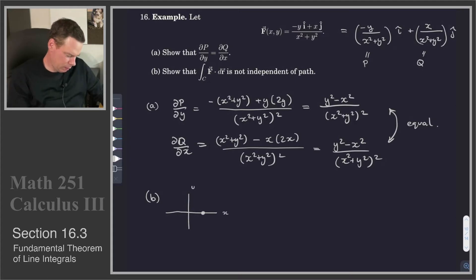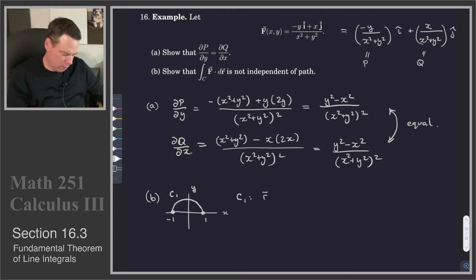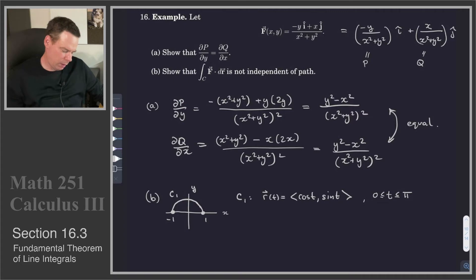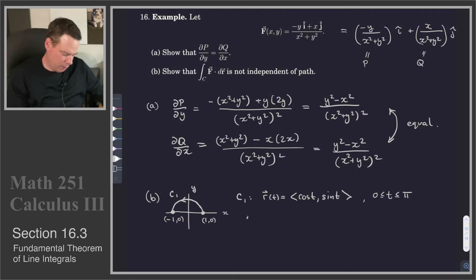I'll take a curve going from (1,0) to (-1,0) along the upper part of a semicircle — call that curve C1. Curve C1 is parametrized as r(t) = (cos t, sin t), the upper portion, so t goes from 0 to π. And so if I compute the integral of this vector field F over curve C1, it will be the integral from 0 to π.